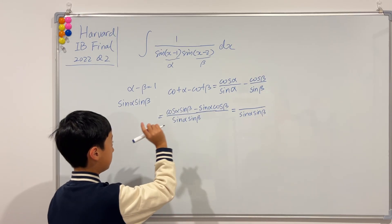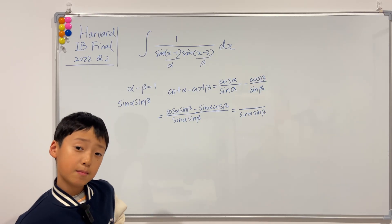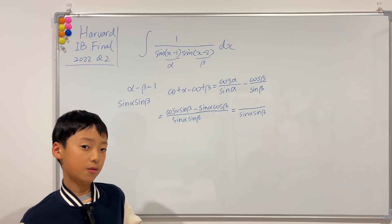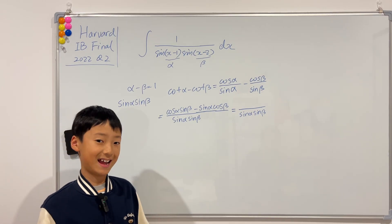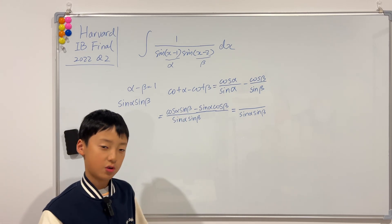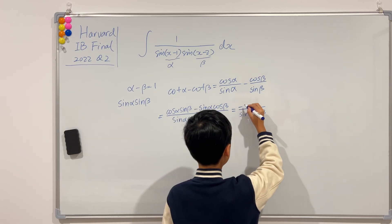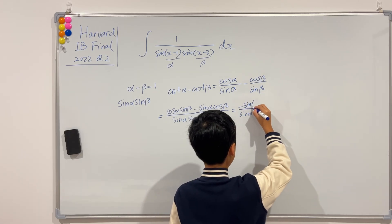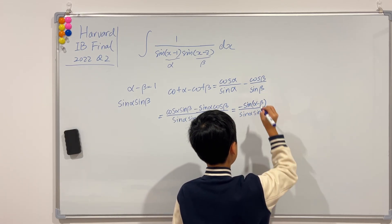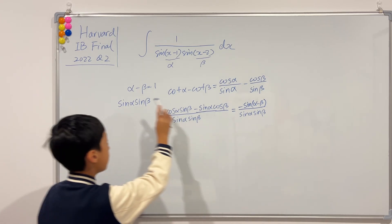And then, the top is, hmm, doesn't this look very similar to sine of alpha minus beta? Yes, but not exactly. Because, sine alpha minus beta is the other way around. So, how do we fix that? Just add a negative to it. So, negative sine of alpha minus beta. And now look, we've connected it. We have this, and we have this.